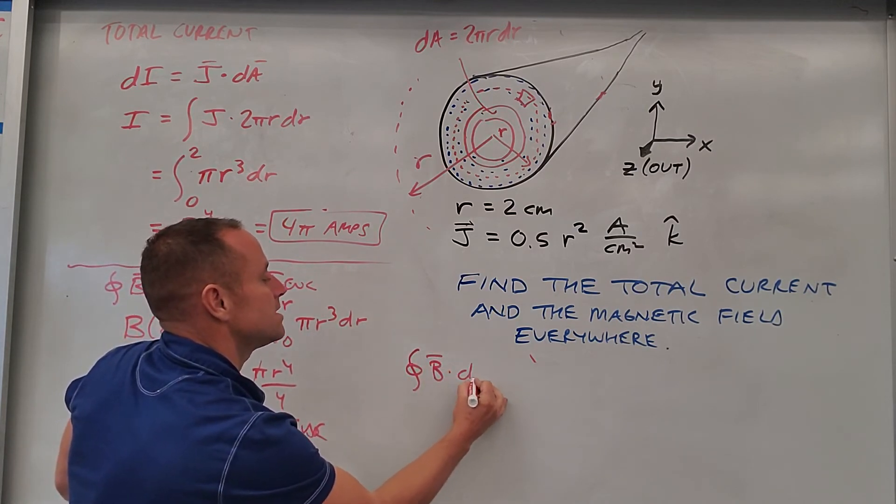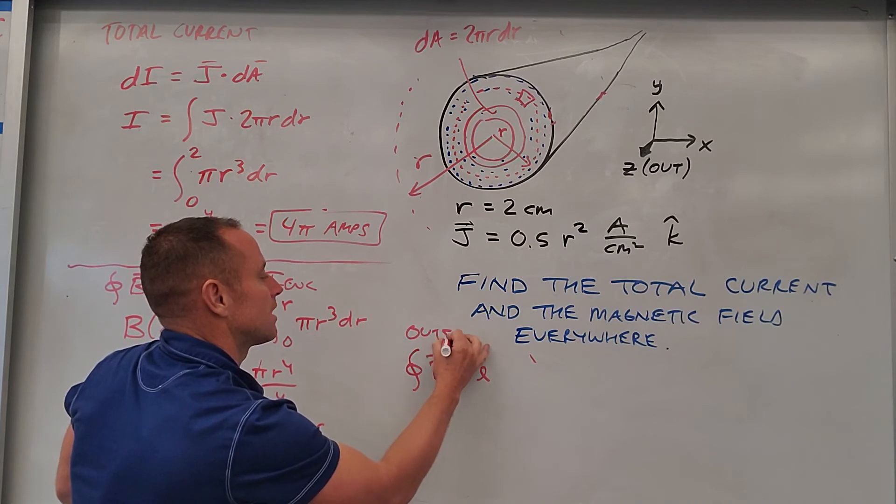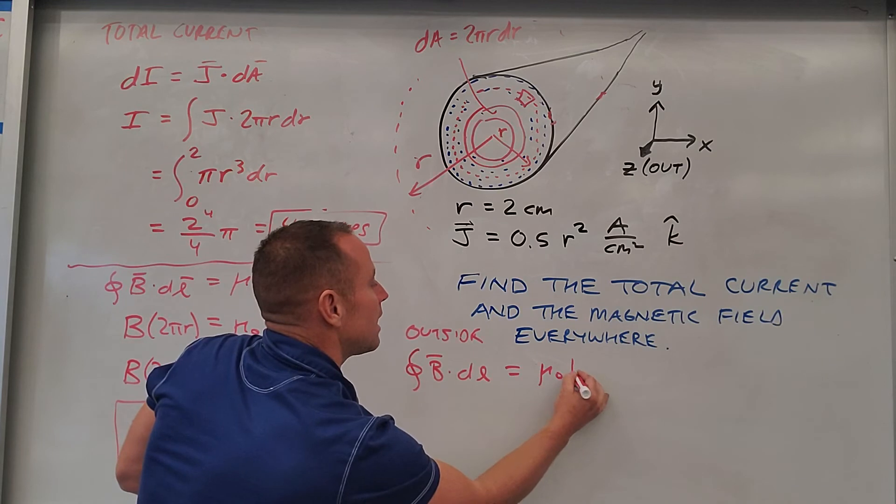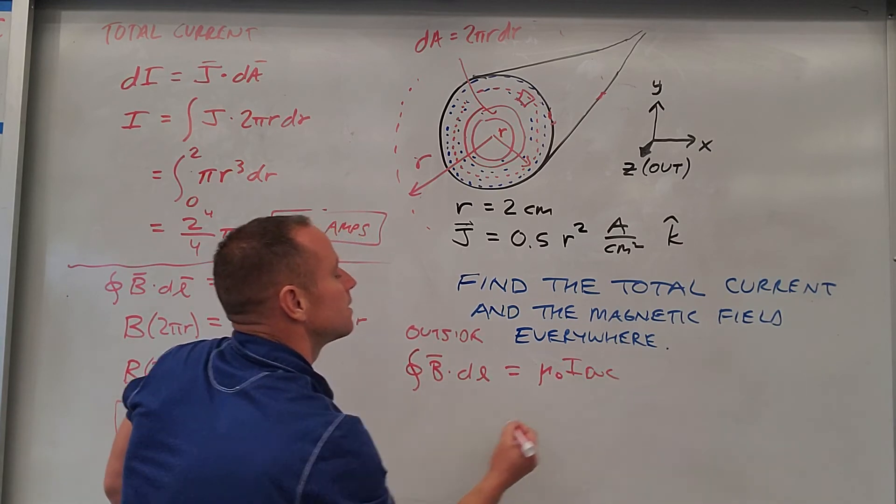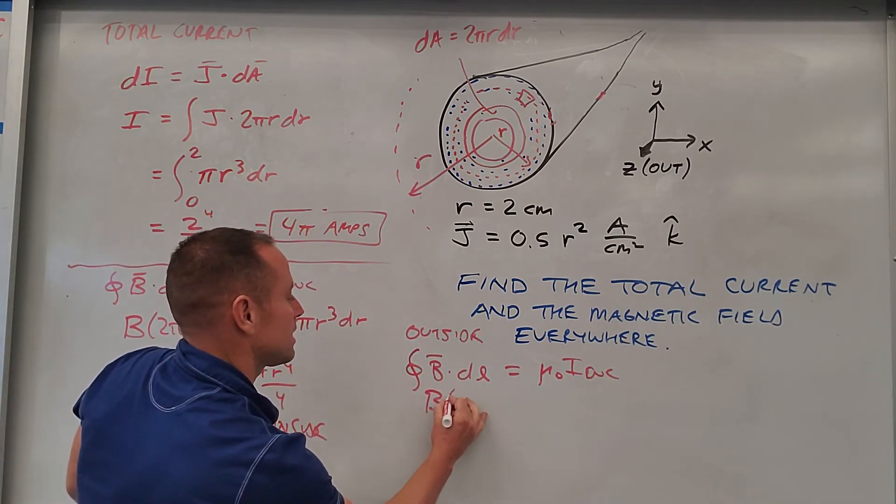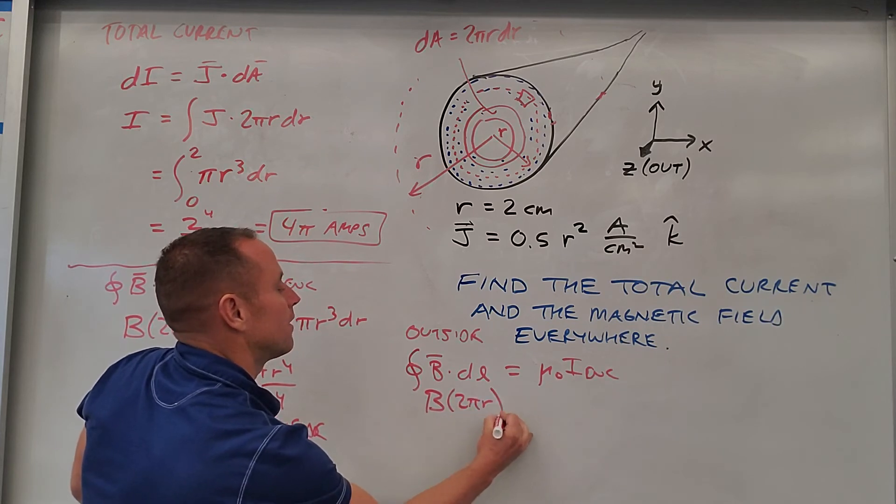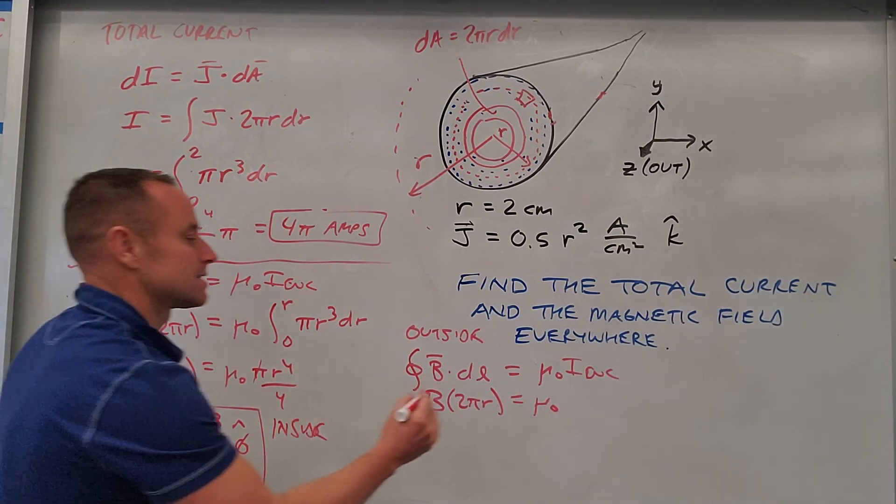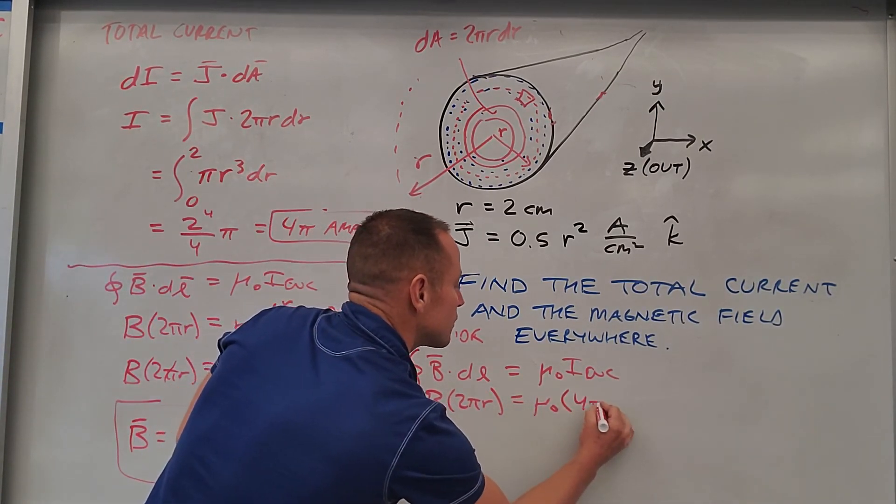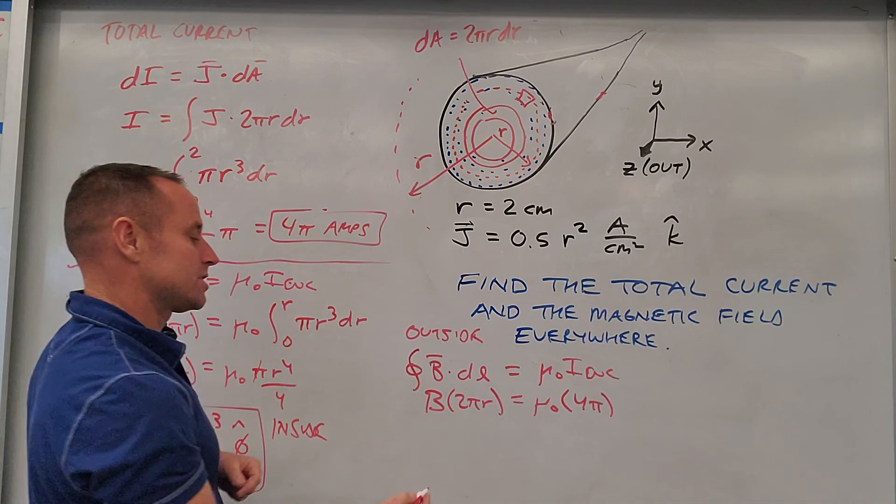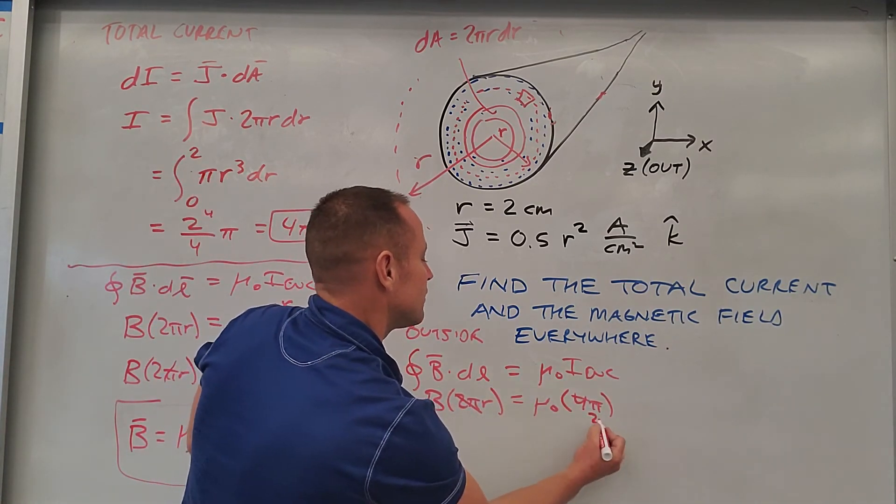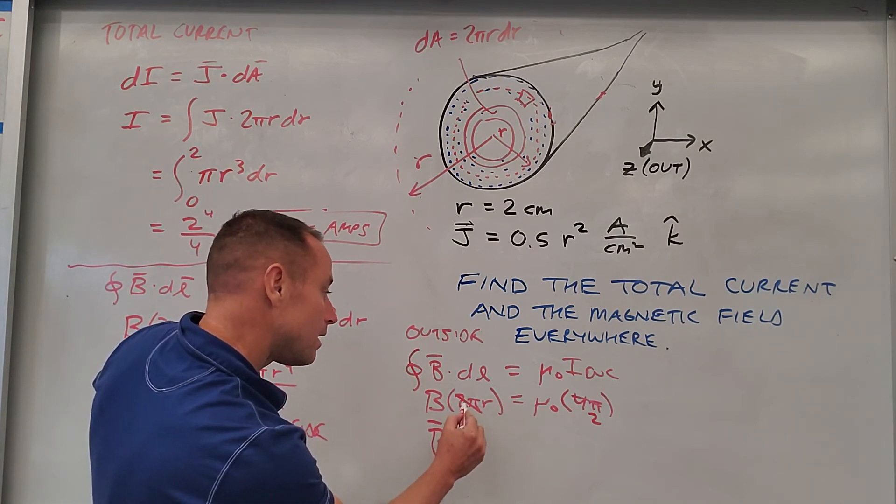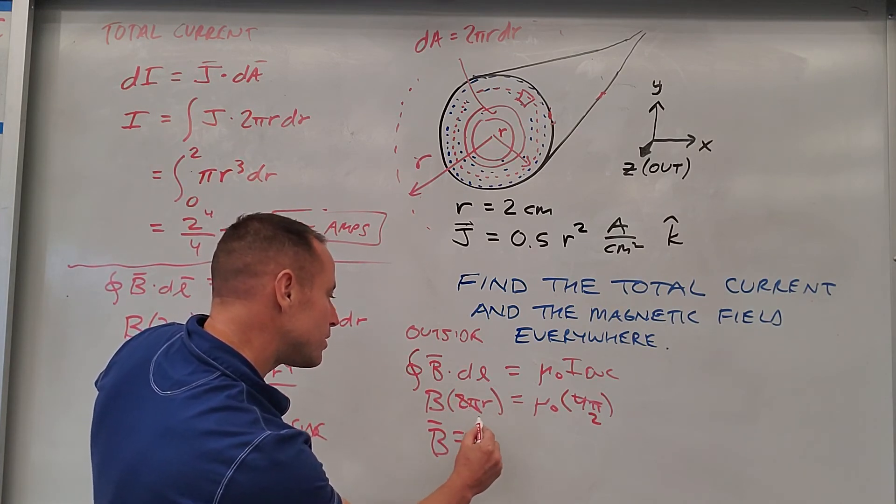It's closed loop integral of B dot DL is mu naught I enclosed. This is still the same, B times 2 pi R equals mu naught, and we already found that there's 4 pi amps inside this thing. So mu naught times 4 pi. So we're actually already pretty much done. The 2 pi's would cancel, kind of leaving a 2 here. So you just get the magnetic field being 2 mu naught over R.